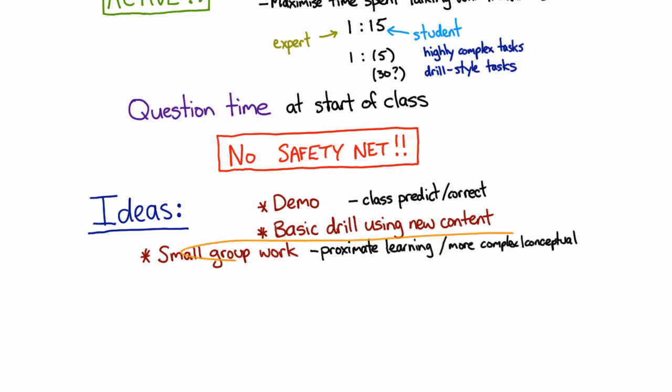You can actually combine the small group work and the prediction-correction model for getting students to refine their conceptual models, and you can do that for the whole class in a sequence of questions provided you have appropriate technology.